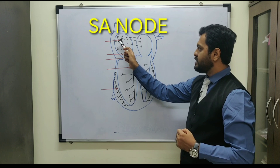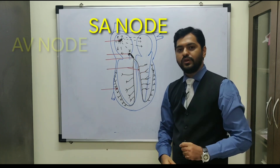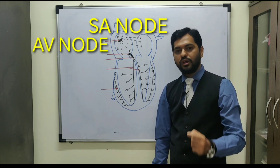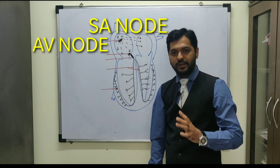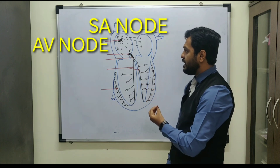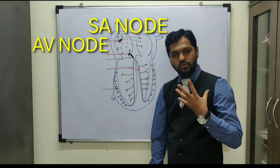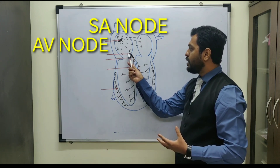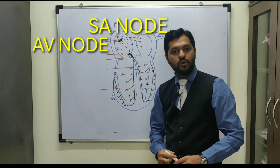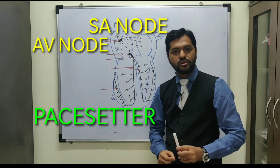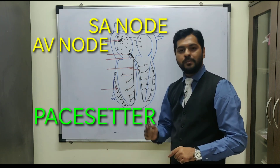From the SA node, the impulse is transmitted to the next structure, known as the AV node - the atrioventricular node - which is again present in the right atrium, near the opening of the coronary sinus. The AV node receives impulses from the SA node through certain internodal pathways. Hence the AV node is called the pace setter. Remember: the SA node is the pacemaker whereas the AV node is the pace setter.